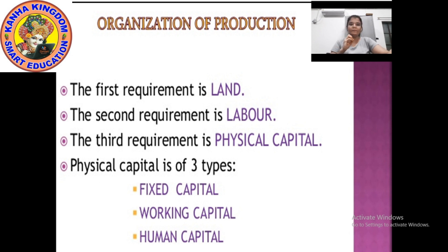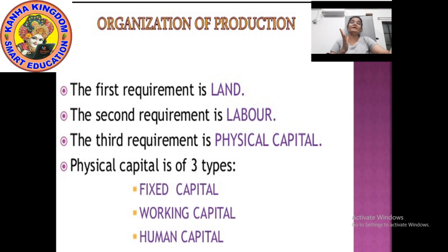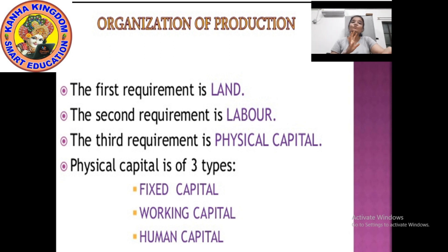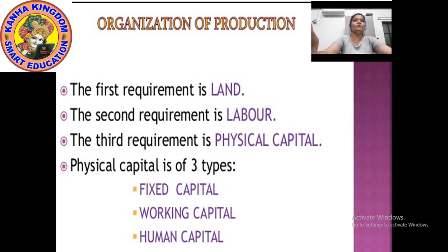The first requirement is the land. Second is labor. Third is physical capital. Now this physical capital is of three types: fixed capital, working capital and human capital. But first let us discuss about the first requirement, that is the land.